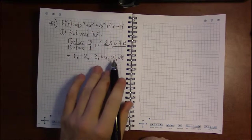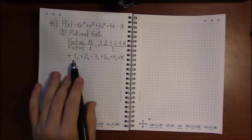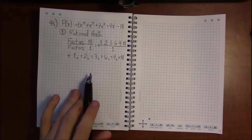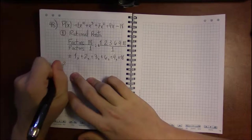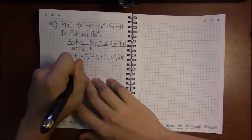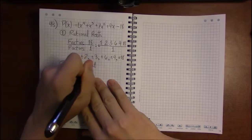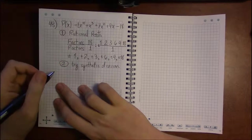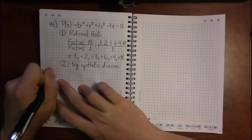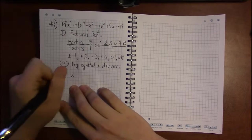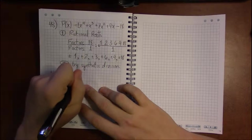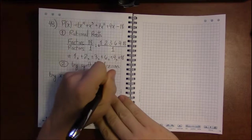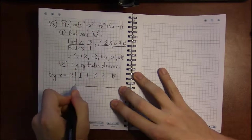A graphing calculator will help you quickly identify which one of these might be zeros. I'm going to cheat as usual and use synthetic division with my instructor's edition. I see that minus 2 is going to be a good candidate. I write down the coefficients: 1x to the 4th, 1x cubed, 7x squared, 9x, and minus 18.